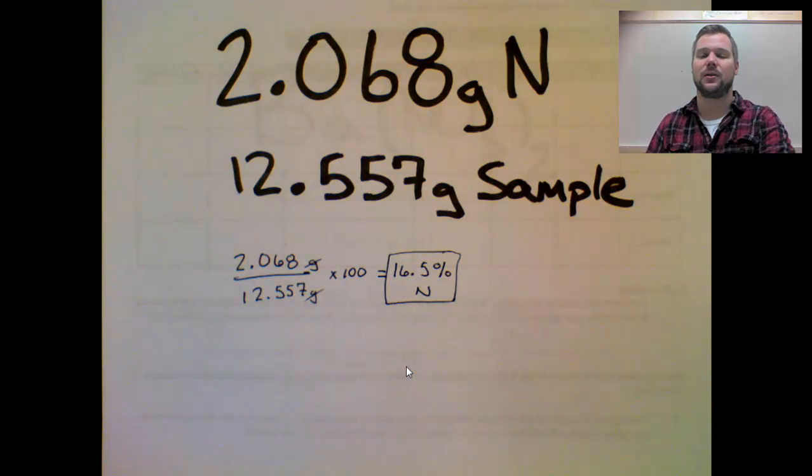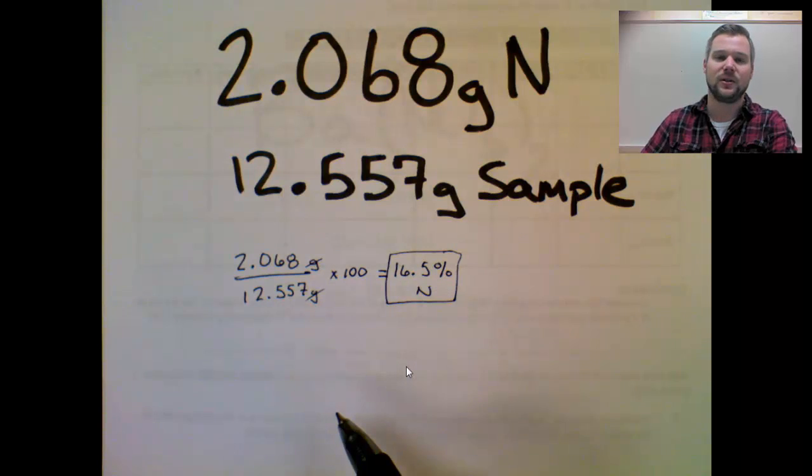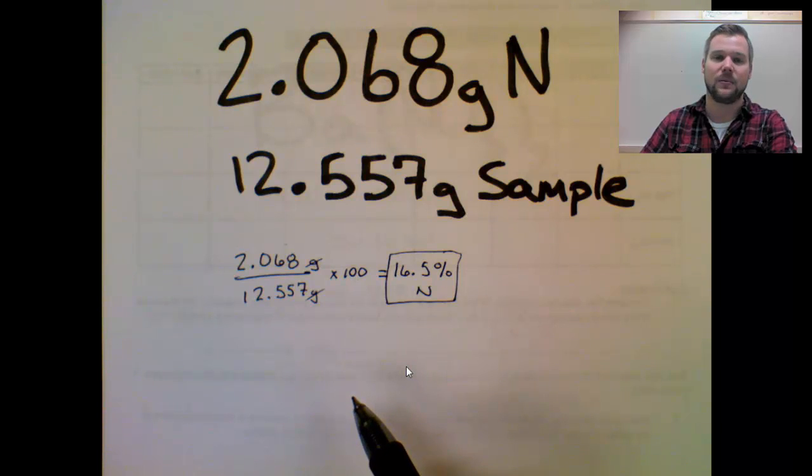Now, what we also know is that the remaining of the sample is 100 minus 16.5, so let's just say this was dinitrogen monoxide. We know that the remainder, the 83.5%, must be oxygen if that were to be the formula.